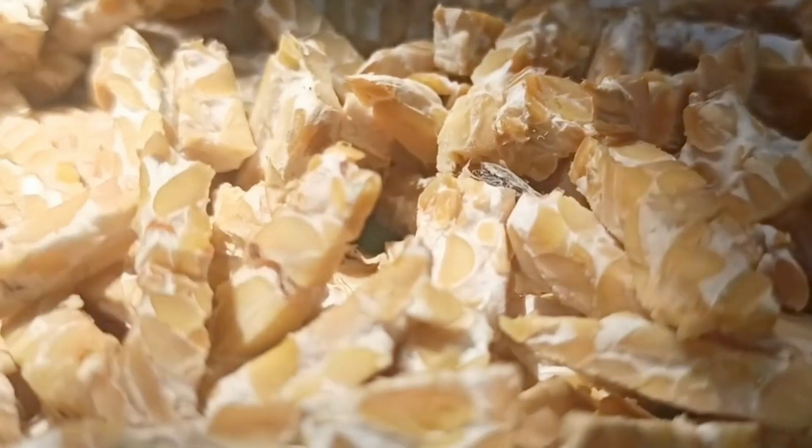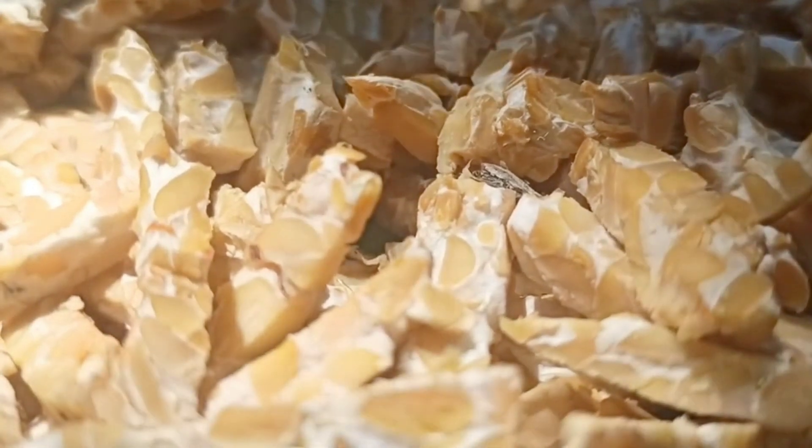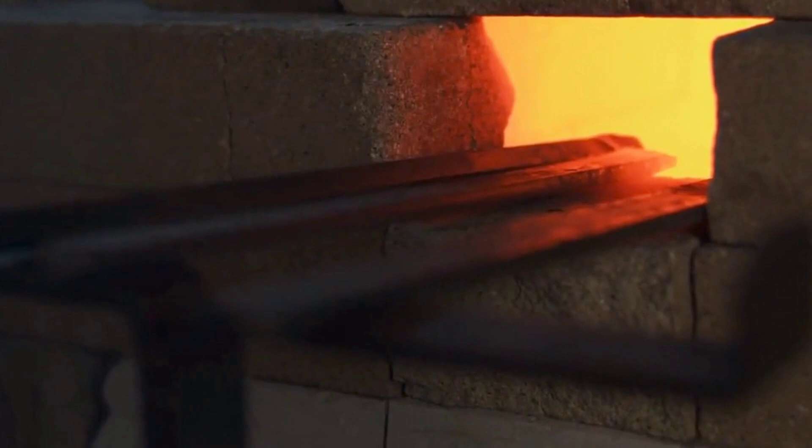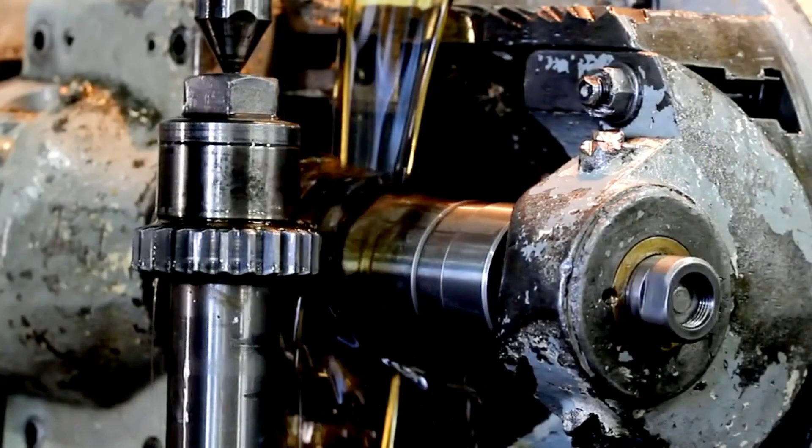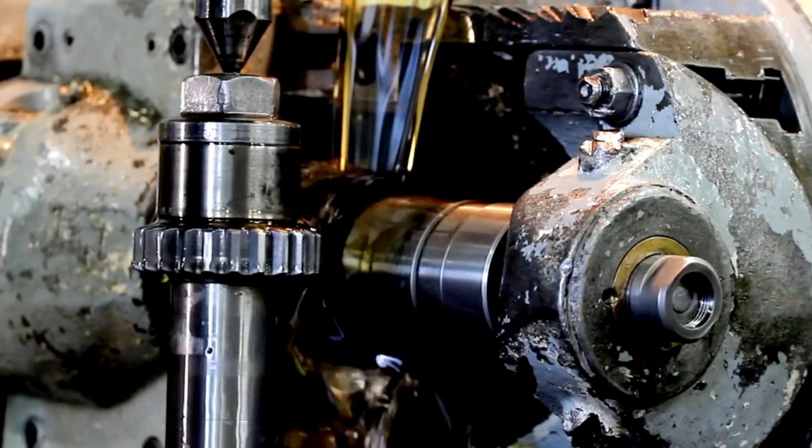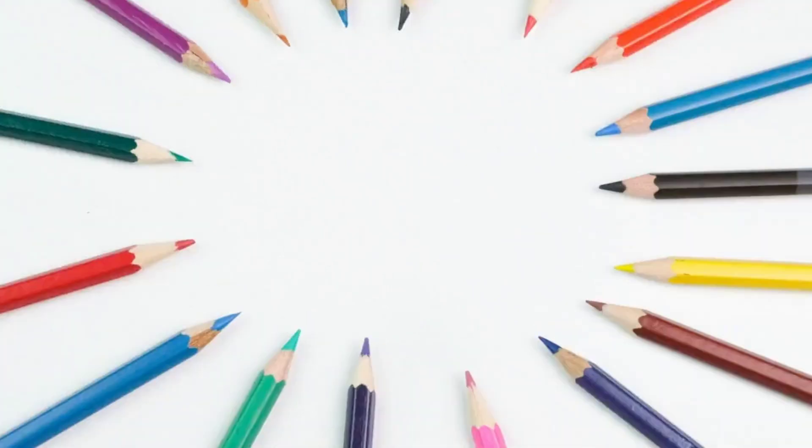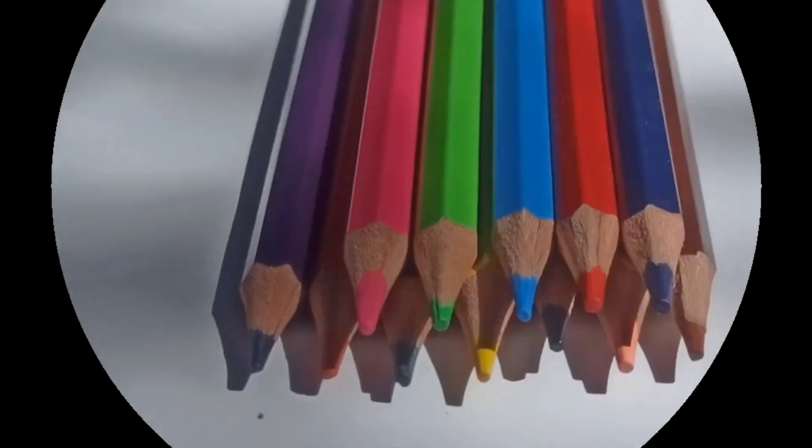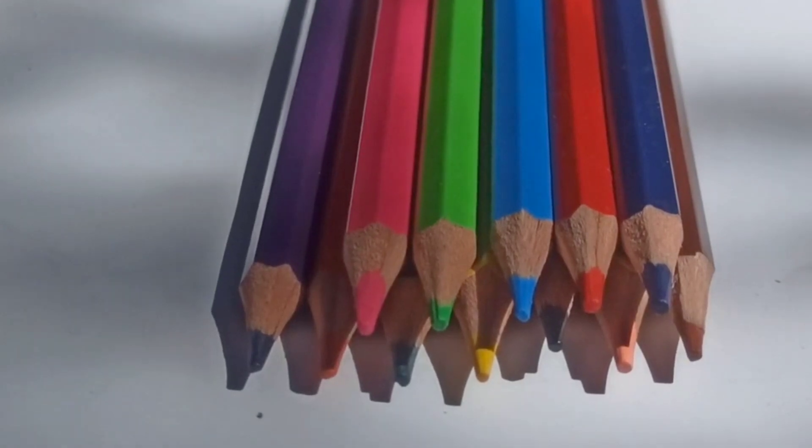The cut rods are then baked in a kiln at over 1,000 degrees Celsius. This extreme heat hardens the rods and gives them their final form. Once cooled, the rods are treated with a wax or oil coating. This coating not only adds a touch of shine, but also aids in the smooth transfer of the core onto paper. With the core ready, it's time to give the pencil its body.